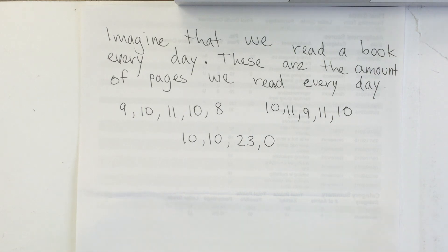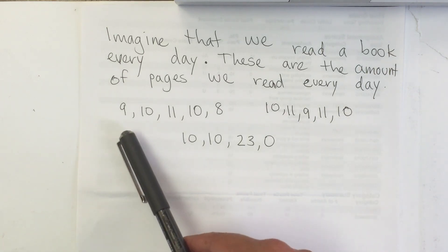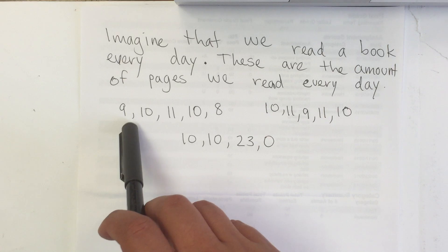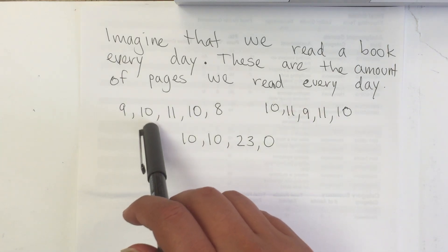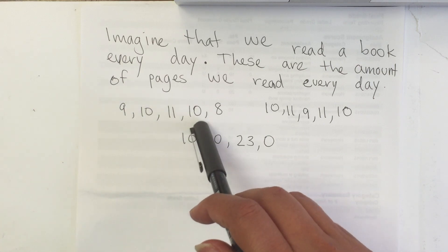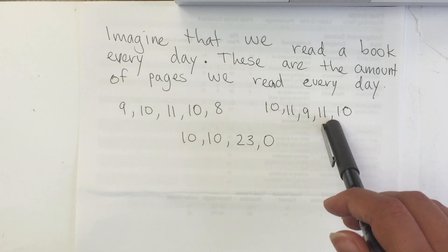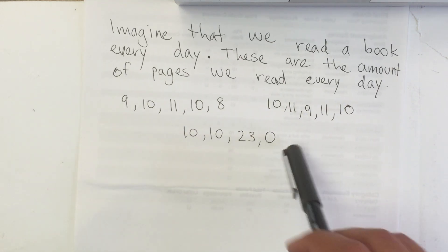Imagine that we read a book every day. These are the amount of pages we read every day. Let's say that we start on a Monday and we only read during the week. So we have 9, 10 pages the next day, 11, then 10, 8, 10, 11, 9, 11, 10, 10, 10, 10, 23, and 0.